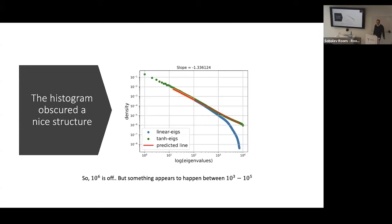To answer the question: I take the data matrix, multiply it by a random matrix, do an entry-wise activation function, and then look at the singular values of that matrix. So I'm applying the activation function to the data passed through the random weight matrix, not directly on the eigenvalues.